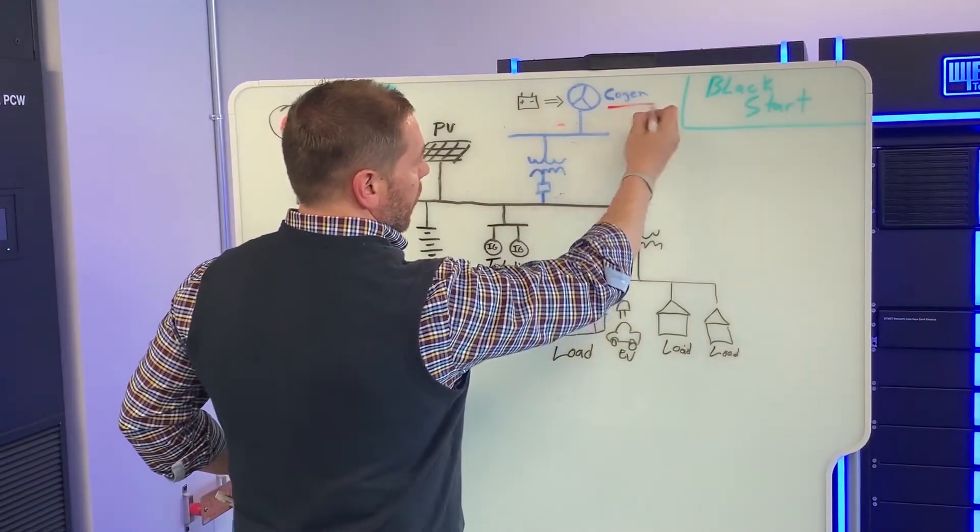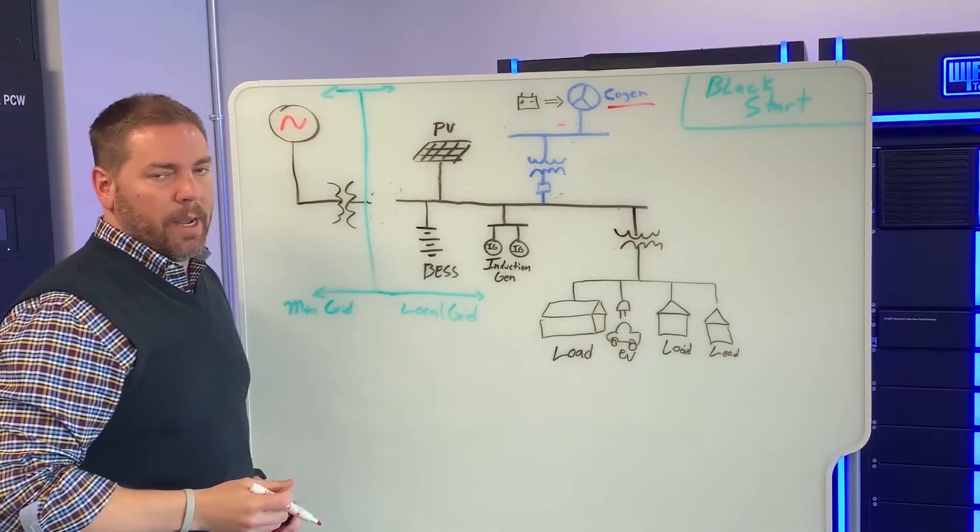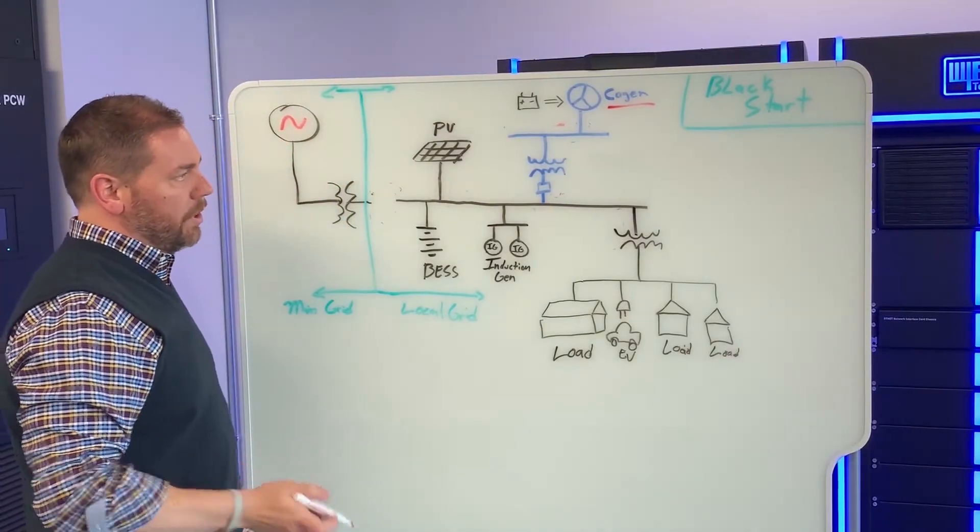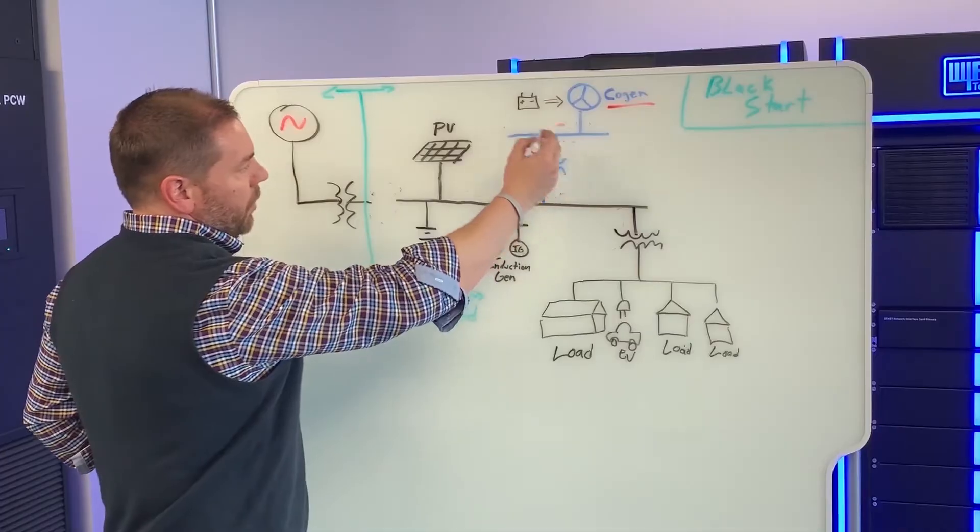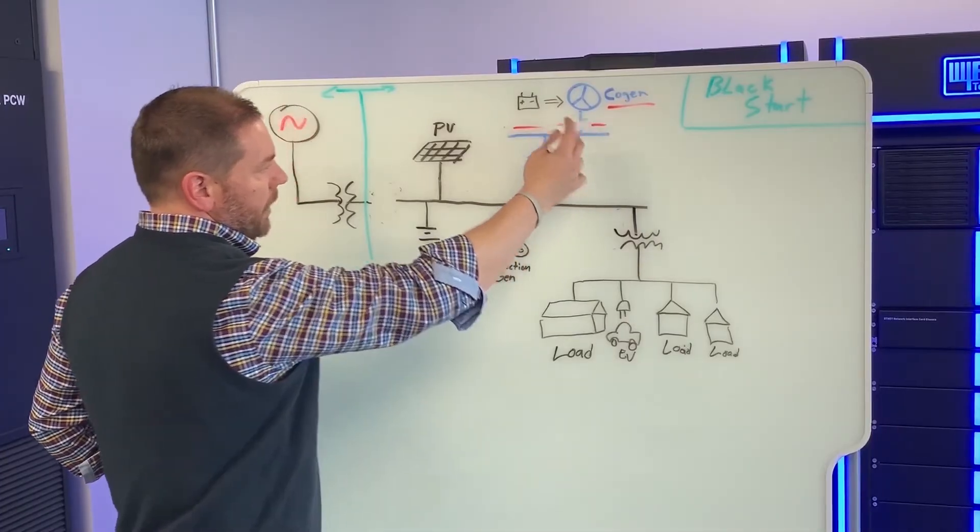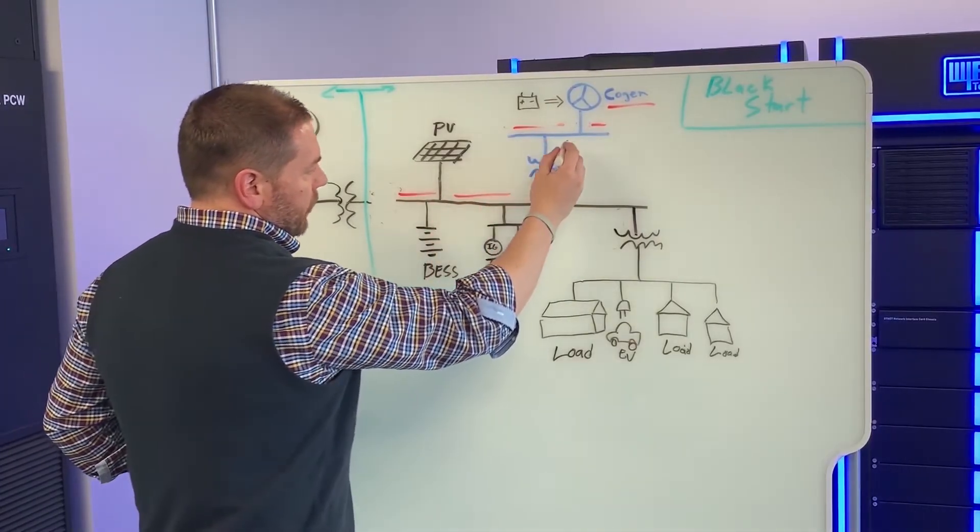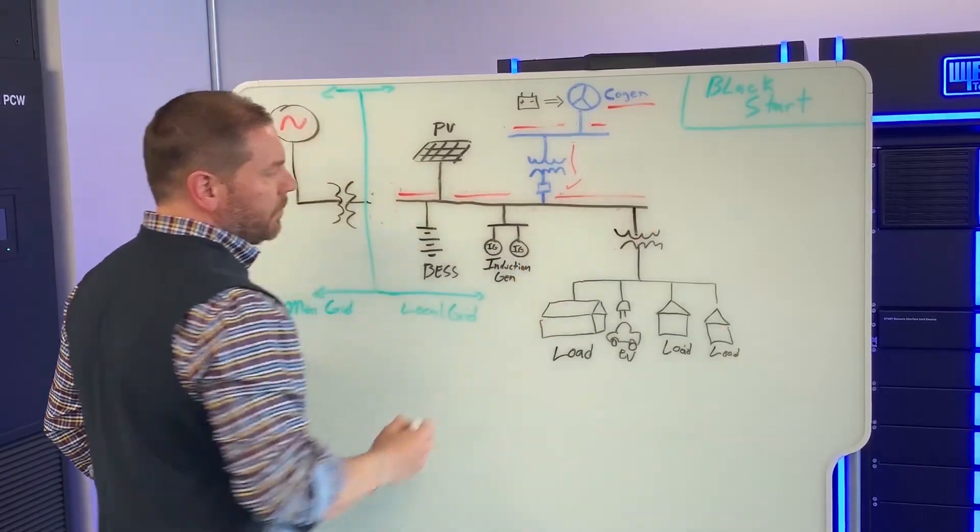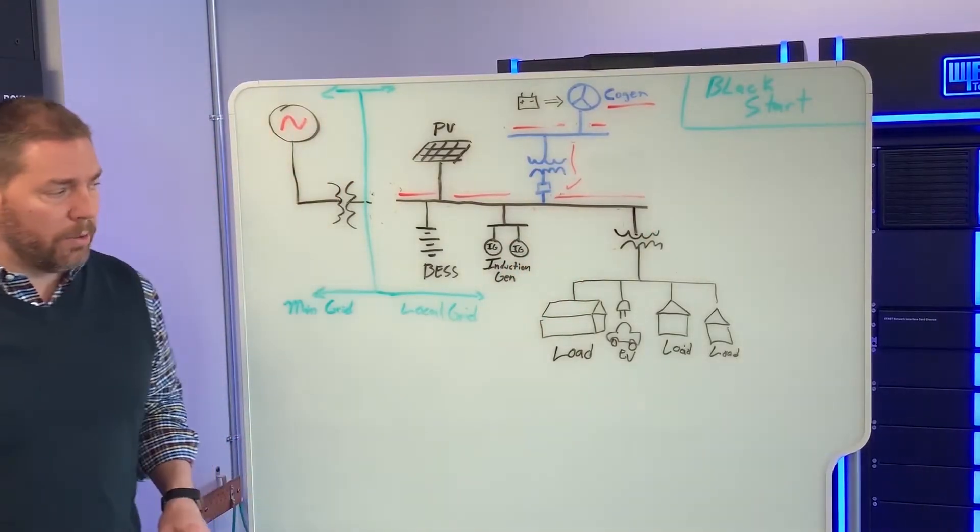We now are, in this example, our Black Start unit is the Cogen unit. The system has started up. We've energized the Cogen bus. We've now energized the transformer and this bus. And now it's ready to take on loads.